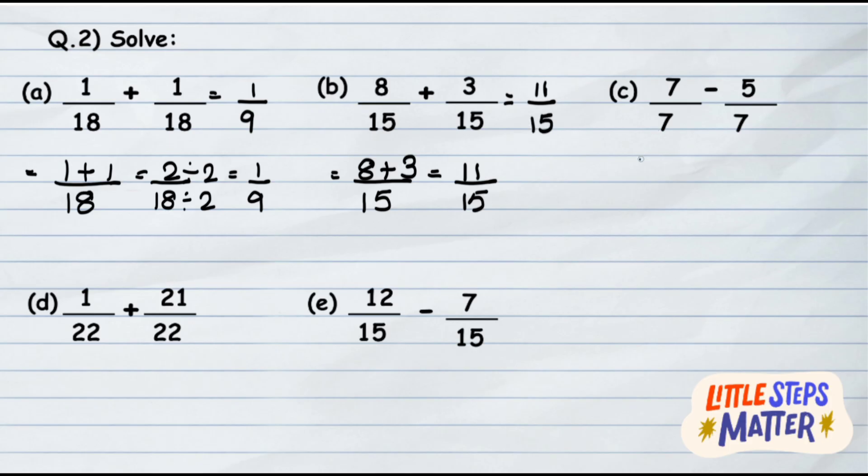Now let us check question C which is 7 upon 7 minus 5 upon 7. Here again, the denominators are same, so simply subtract the numerators. 7 minus 5 whole gives you 2 upon 7. Is it in simplest form? Yes. So the answer of 7 upon 7 minus 5 upon 7 is 2 upon 7.